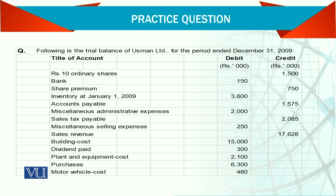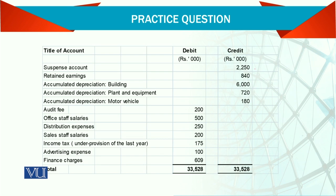There is a company called Usman Limited and they have share capital of 10 rupees per share, then bank account, then share premium, then inventory beginning January, then accounts payable, miscellaneous expenses, sales tax, sales, building cost, dividend paid, plant and equipment, purchases, and motor vehicle.